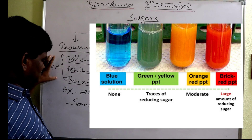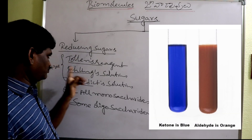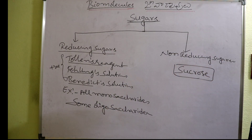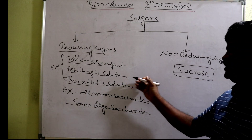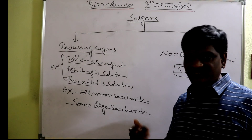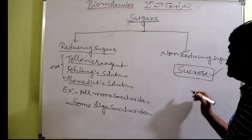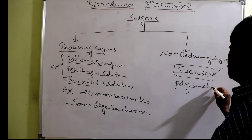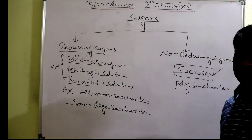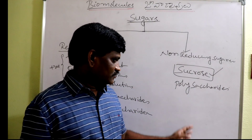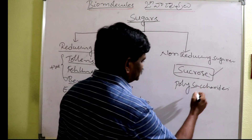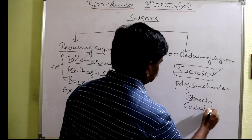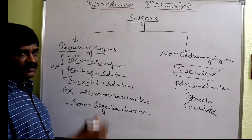This is the positive test for Tollens, Fehling, and Benedict for carbohydrates. Non-reducing sugars are carbohydrates which cannot reduce Tollens, Fehling, or Benedict solution. The best examples are sucrose and polysaccharides — starch and cellulose.